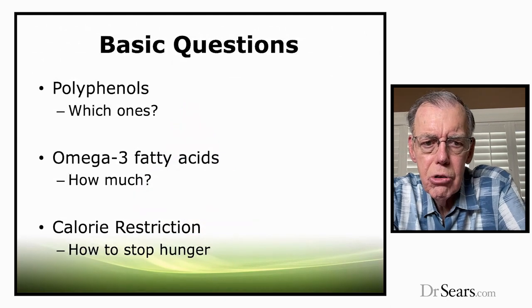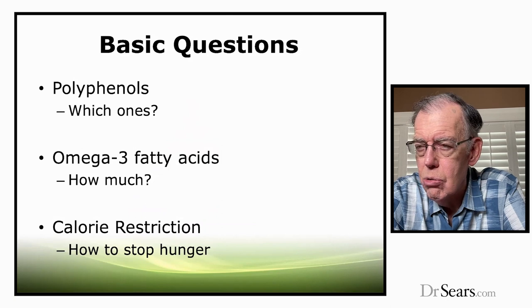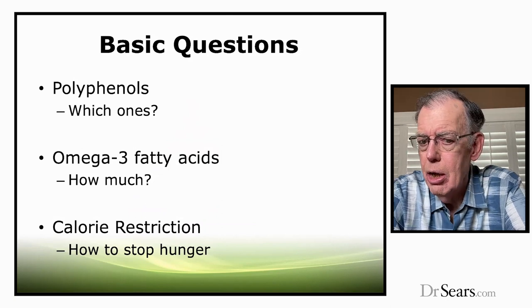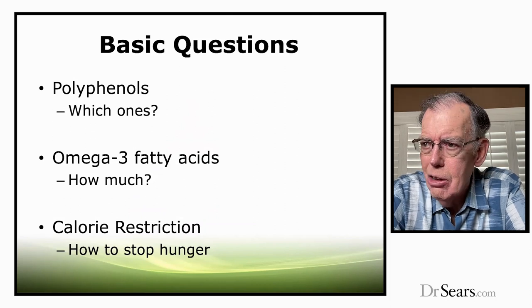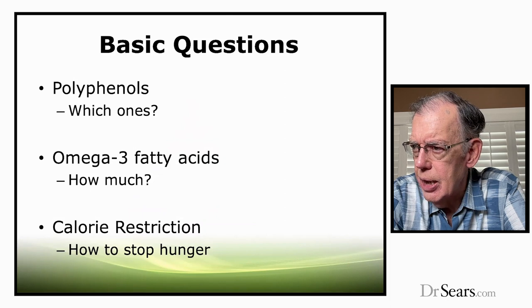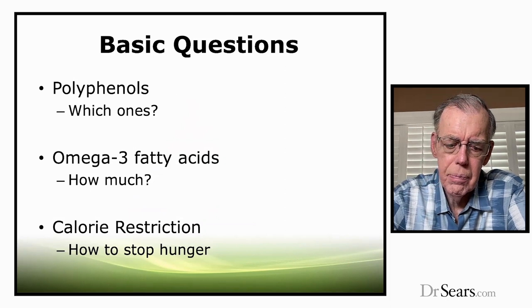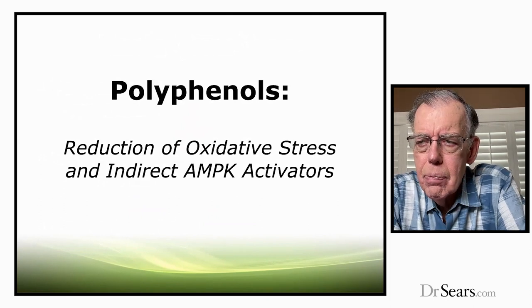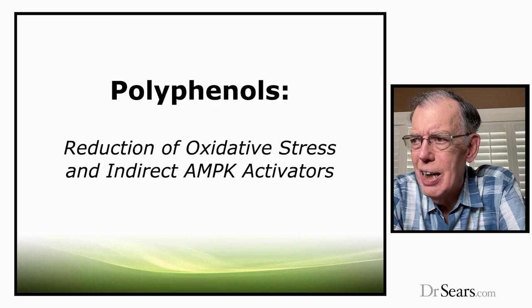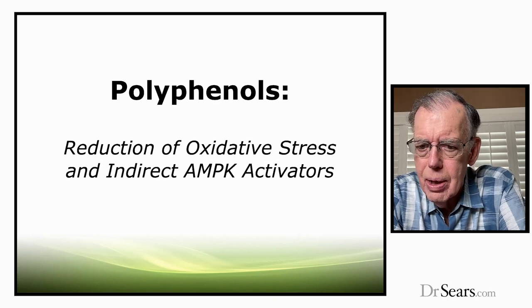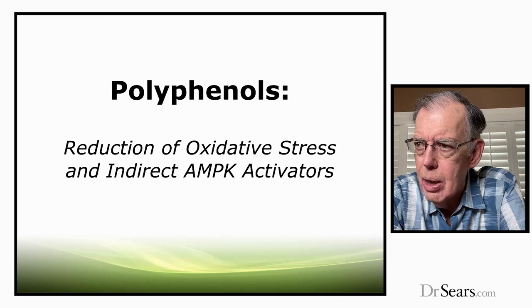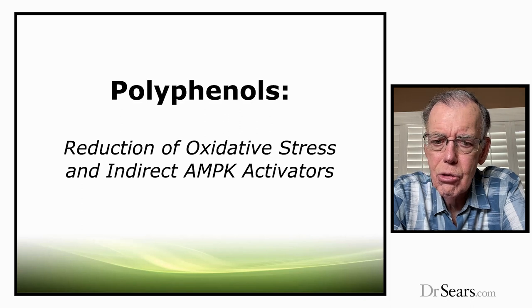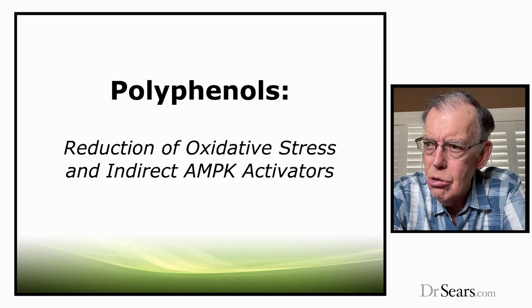Some basic questions: we talk about polyphenols — which ones? There are 8,000. We talk about omega-3 fatty acids — how much? And for calorie restriction, how do you stop hunger without fatigue and with the least effort? Let's start with polyphenols. Why do we need them? At the molecular level, they reduce oxidative stress — these are free radicals — and they're indirect activators of AMPK. But if they're not in your diet in sufficient levels, you'll have high levels of oxidative stress, and that will cause insulin resistance.